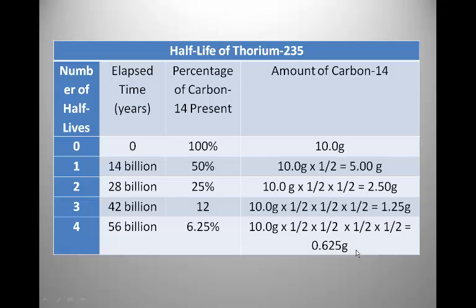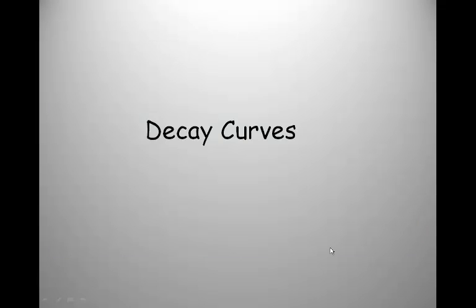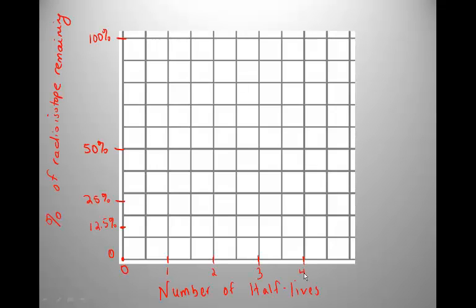Here's thorium-235, another radioisotope. We can see that it has a much longer half-life — 14 billion years. But the pattern is the same. We can graph this type of information to get a decay curve. Pause the video for a moment and copy this graph. What we're going to draw is a generic radioisotope decay curve. The shape of the curve is going to be the same no matter which radioisotope you're using.